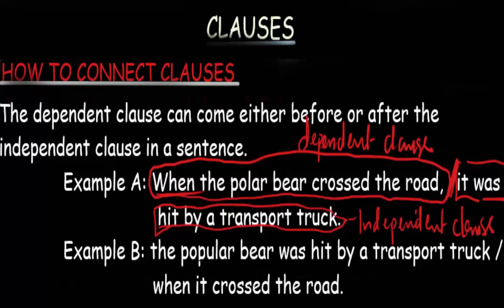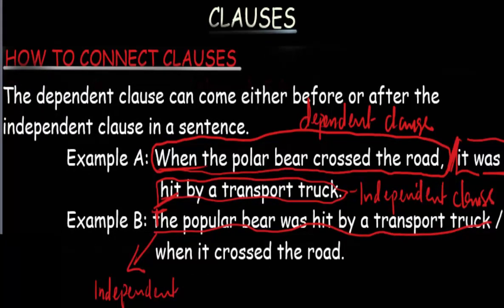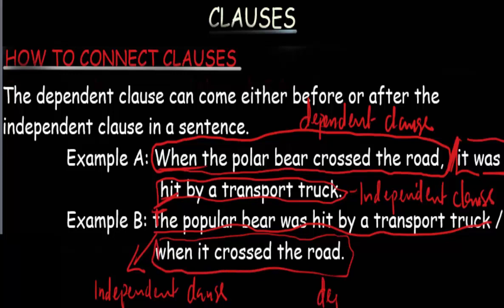Now let us look at example two. It says: 'The polar bear was hit by a transport truck when it crossed the road.' Here, 'the polar bear was hit by a transport truck' becomes our independent clause, coming first. Then 'when it crossed the road' is our dependent clause.